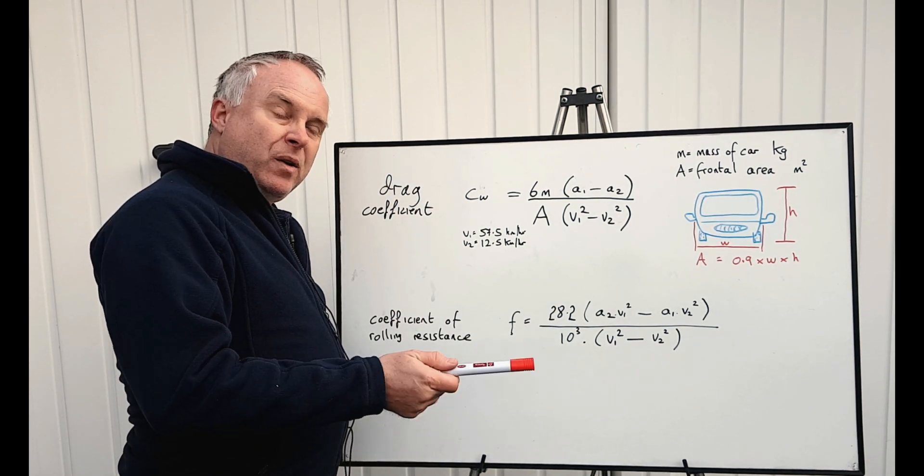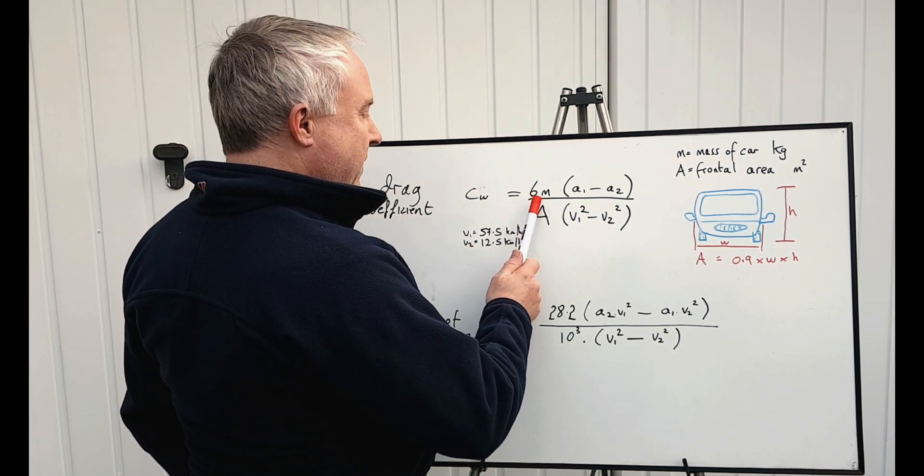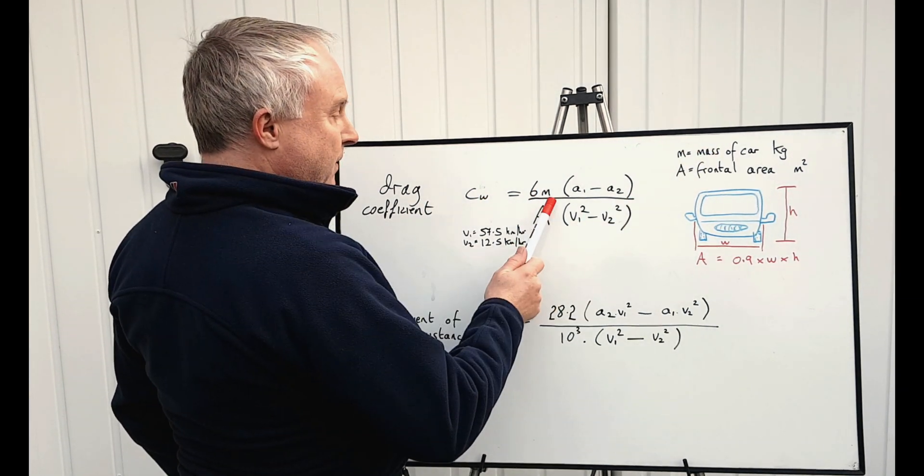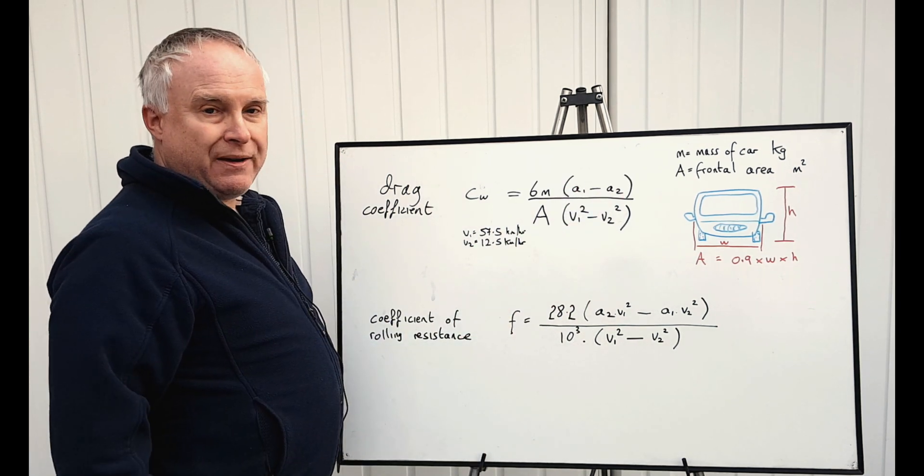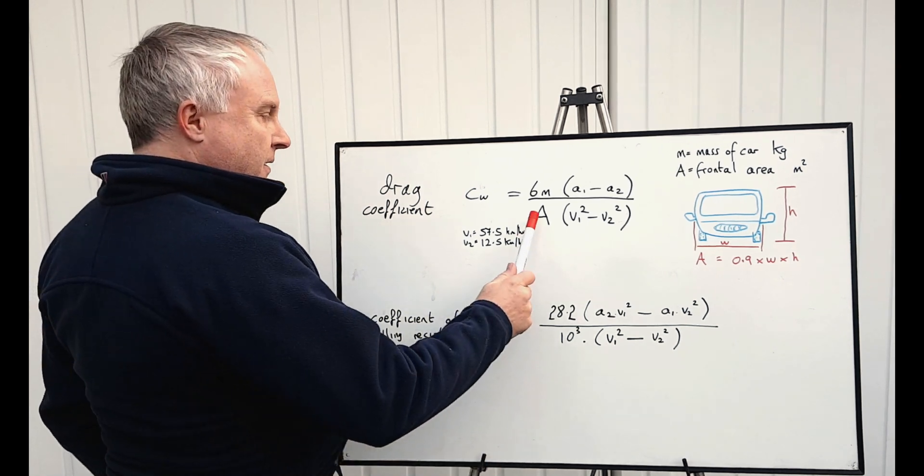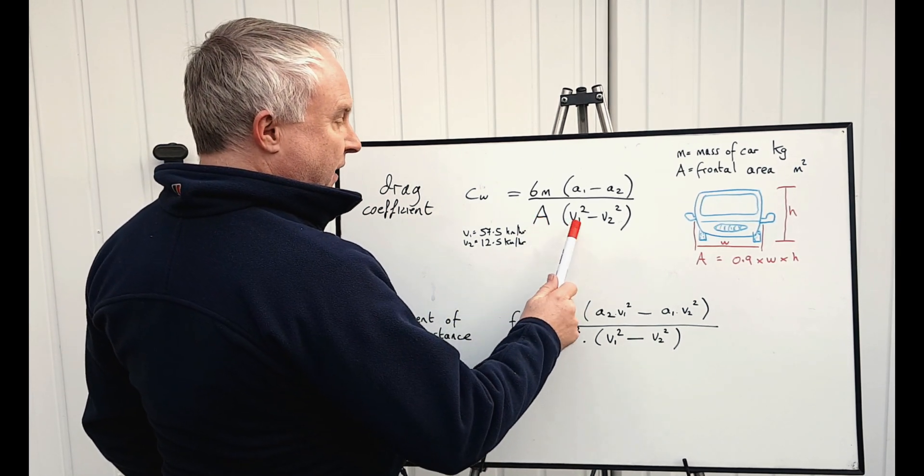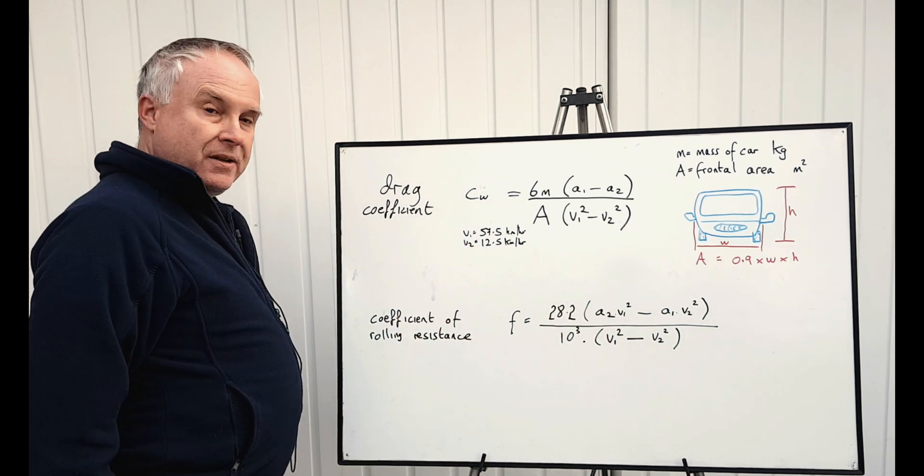The drag coefficient, CW, is six times the mass of the vehicle times the difference between A1 and A2, which are the two average decelerations between the target speeds, divided by the frontal area of the car, multiplied by the difference between the mean speeds squared.